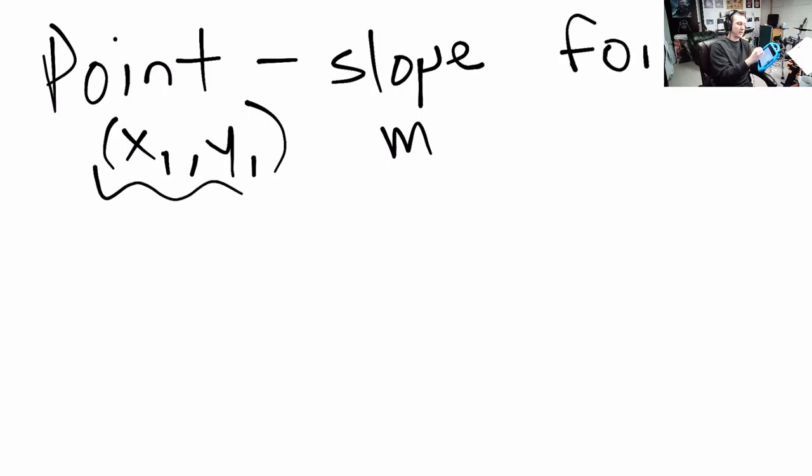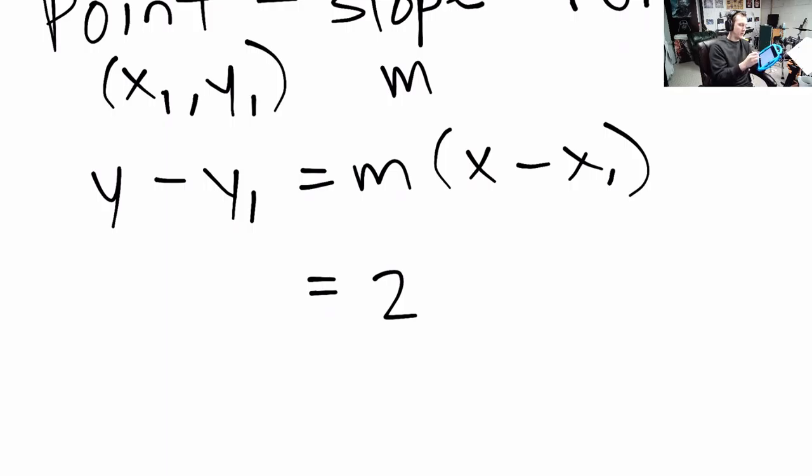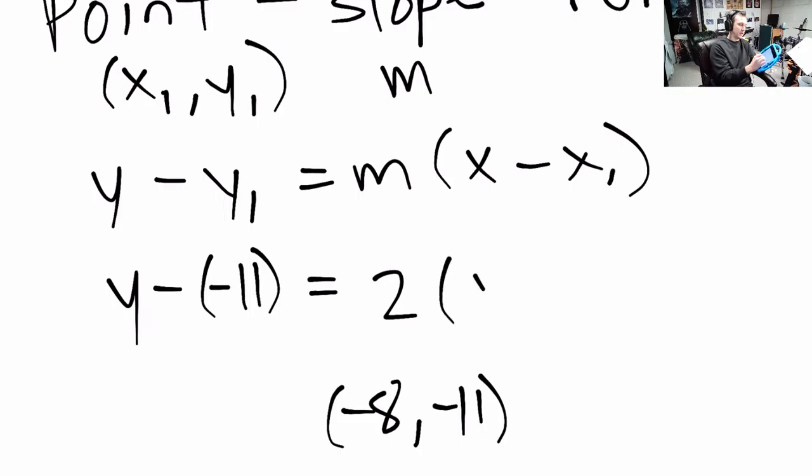which says if you know a point x1, y1 and you know a slope m then an equation for the line through that point with that slope it looks like this: y minus y1 equals m times x minus x1. So, now we just need to fill in the blanks. Our perpendicular slope was 2 and our point was negative 8 comma negative 11. So, we take y minus negative 11, that's our y coordinate, and we take x minus negative 8, that was our x coordinate.